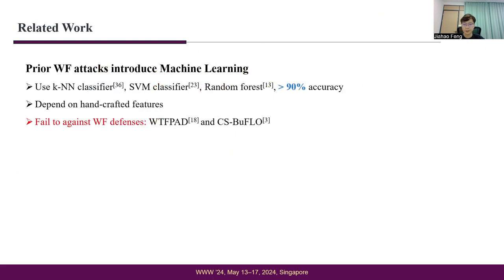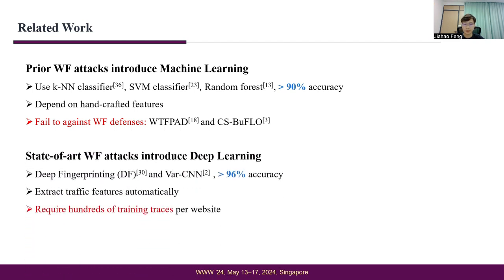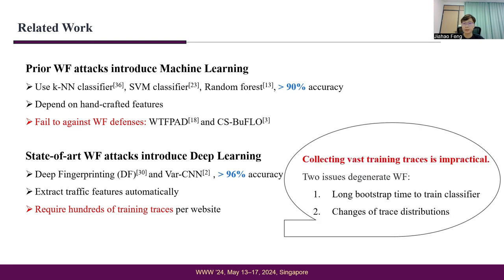Then, as a classification problem, prior WF attacks manually extract traffic features and become vulnerable to WF defense. For instance, recent WF attacks that adopt deep learning can achieve 96% accuracy. However, they require extensive training data, suffer from long collection time, and are sensitive to changes in data distribution.